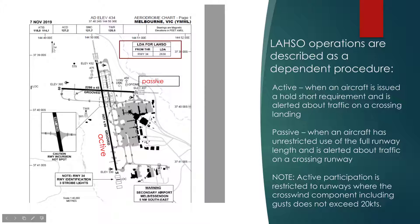The other side of that is the passive runway. The passive runway is when an aircraft has unrestricted use of the full runway length and is alerted about traffic on a crossing runway. So at runway 27, if an aircraft was given permission to land, it could roll right through. Whereas if an aircraft has been given permission to land on the active, there is a requirement for it to hold short.